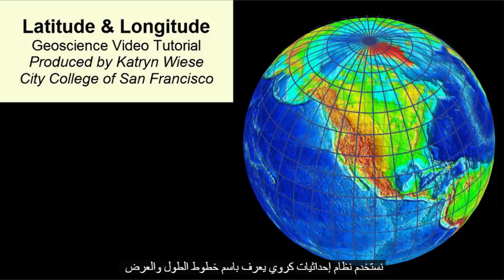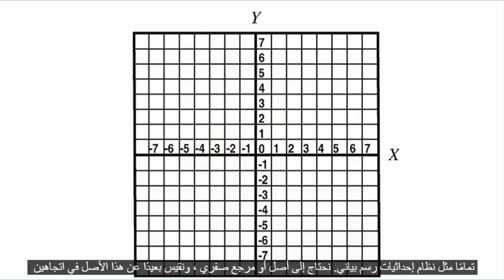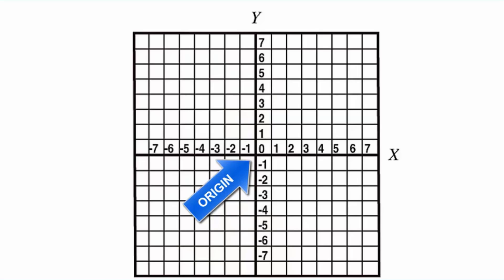We use a spherical coordinate system known as latitude and longitude. Just like a planar graphing coordinate system, we need an origin or zero reference, and we measure away from that origin in two directions.